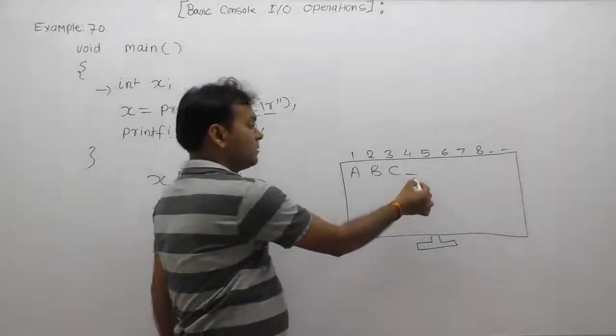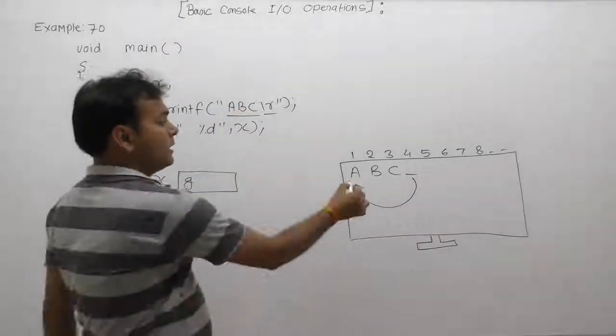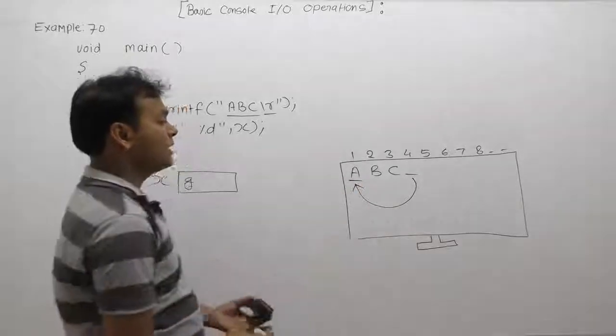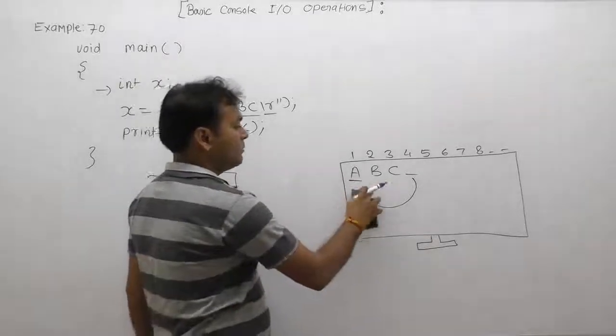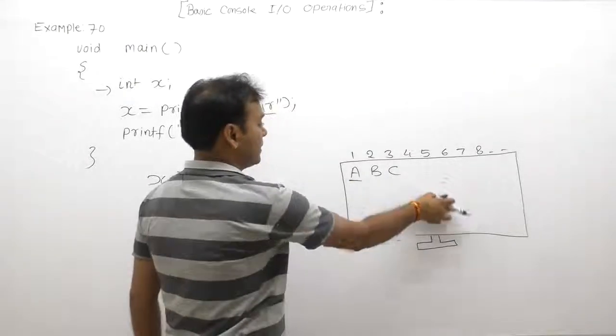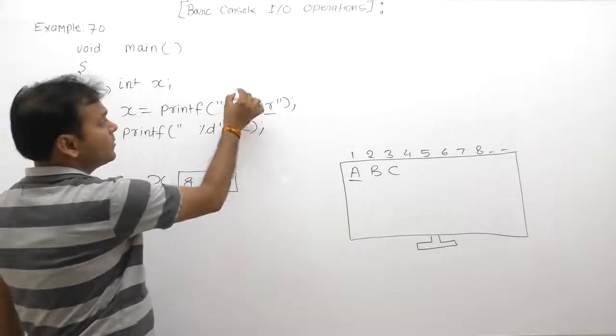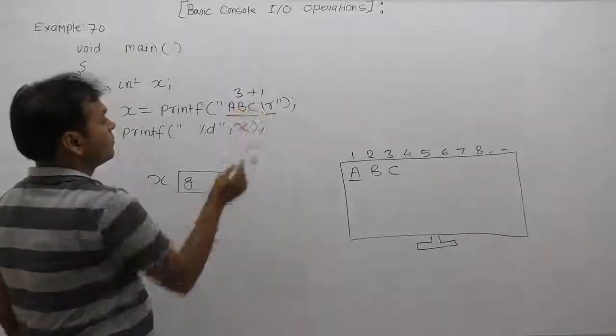Cursor will be shifted to the first position of the current line, means inside A. This is the state after executing this printf statement. Next, how many total symbols are supplied? Three plus one, again four. Therefore it will return number of displayed symbols inside format string. There are four.